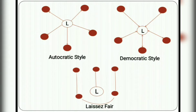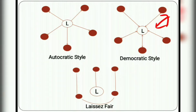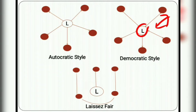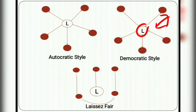For the democratic style, as shown in the diagram, the arrows are in two directions. This is the leader, and the decision-making process is not centralized — it is two-directional. The leader involves their employees in the decision-making process. It is a giving-and-taking process. That is the democratic style, and the person is called a democratic leader.